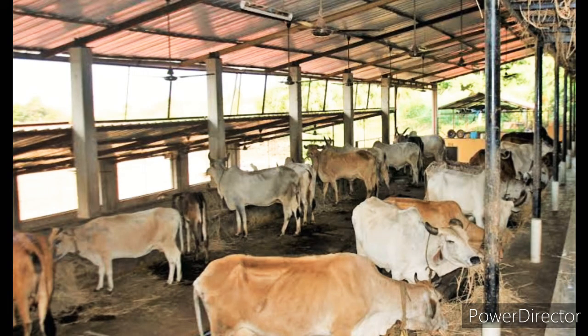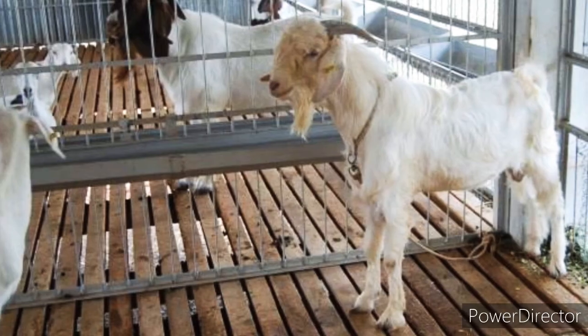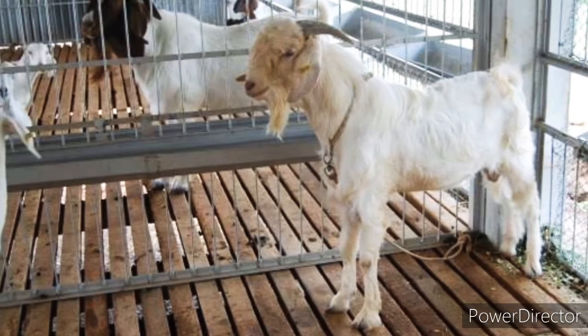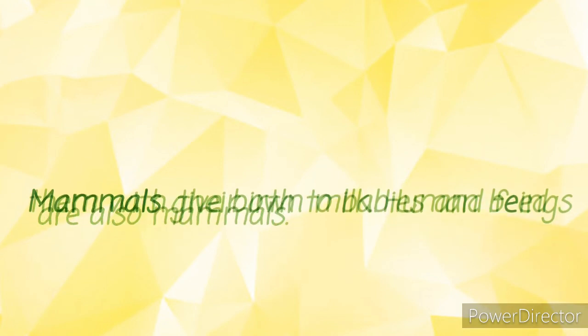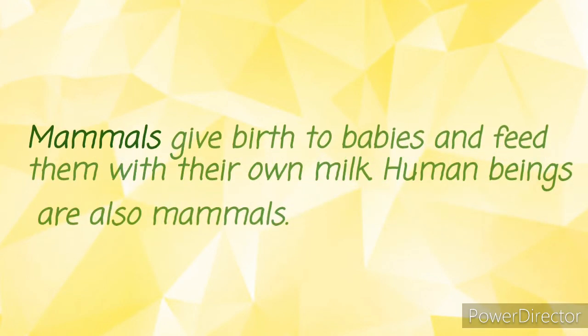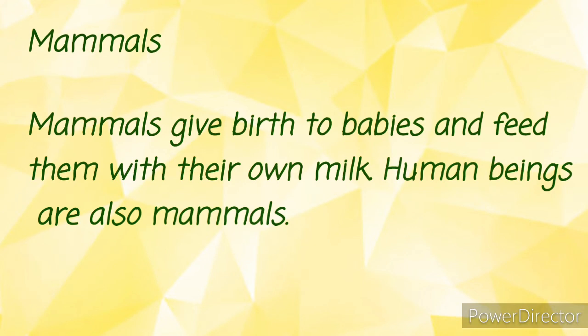And these animals live in a shed. Yeh jo animals hote hai, jahaan par rehte hai, unhye kehte hai shed. The next type of animal is mammals. The animals who give birth to babies and feed them with their own milk are called mammals. Mammals wo animals hoote hai joh babies ko birth deete hai and wo apna milk feed karaate hai.